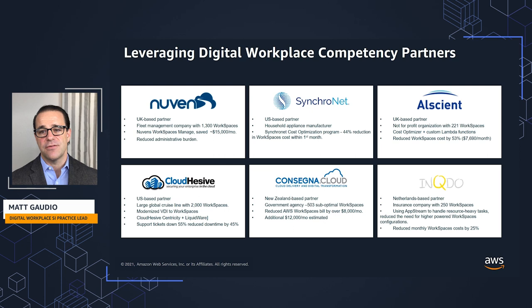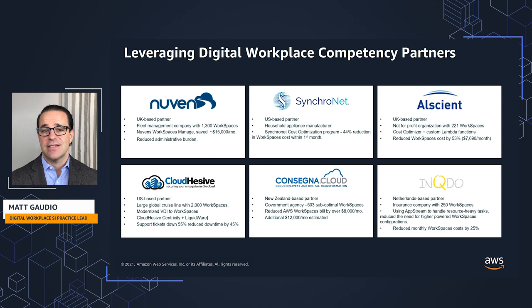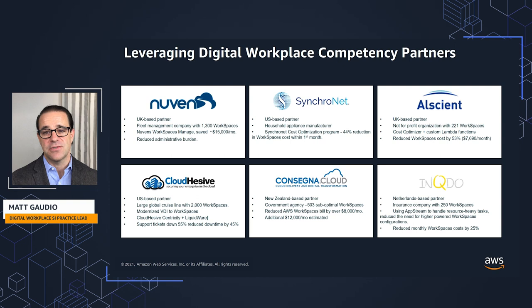Alcyant worked with a not-for-profit organization looking to grow their WorkSpaces deployment from about 221 to about 1,500 workspaces. They were concerned about costs from the initial 221, which gave them hesitation to move forward. Alcyant used the Cost Optimizer to manage the running mode based on consumption, and also built a custom Lambda function that automatically provisions or deprovisions workspaces based on Active Directory group membership — eliminating orphaned workspaces. Together, these led to savings of about $8,000 per month, allowing the customer to grow to the larger footprint.